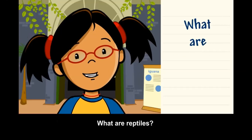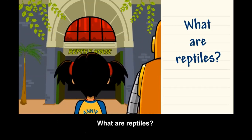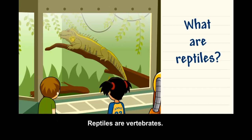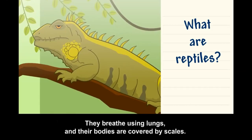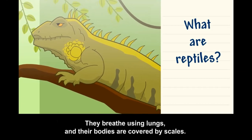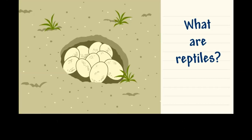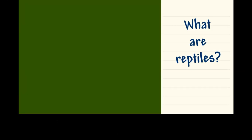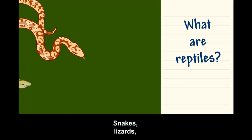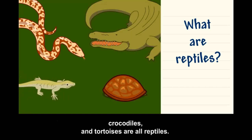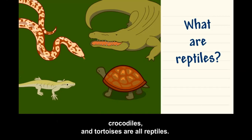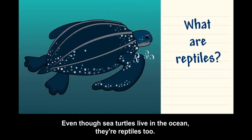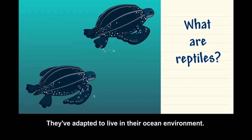What are reptiles? Reptiles are vertebrates. They breathe using lungs and their bodies are covered by scales. Most reptiles lay eggs, kind of like birds. Snakes, lizards, crocodiles, and tortoises are all reptiles. Even though sea turtles live in the ocean, they're reptiles too — they've adapted to live in their ocean environment.